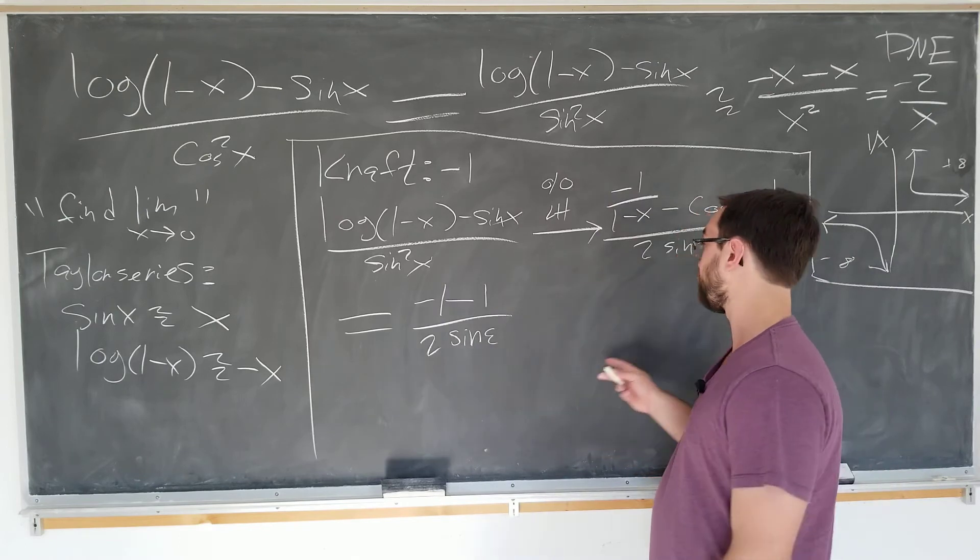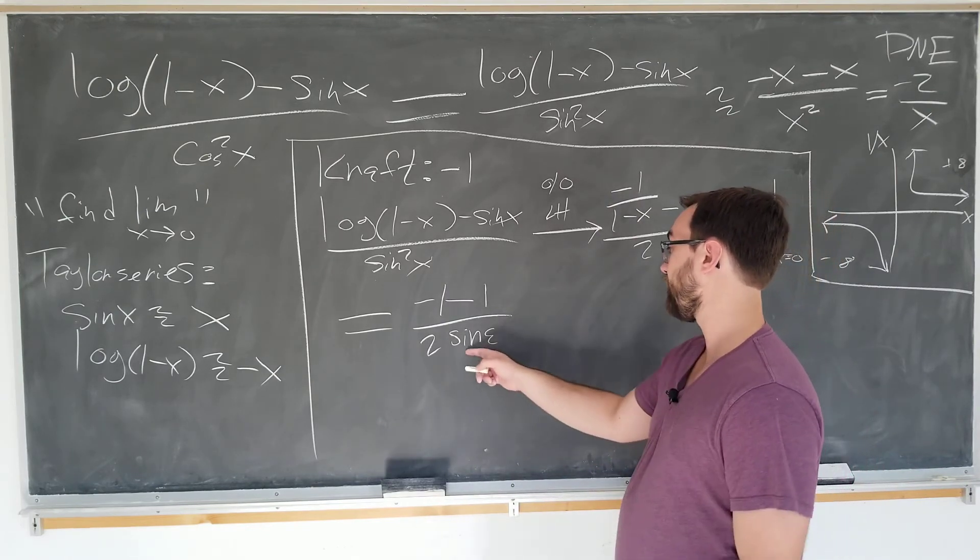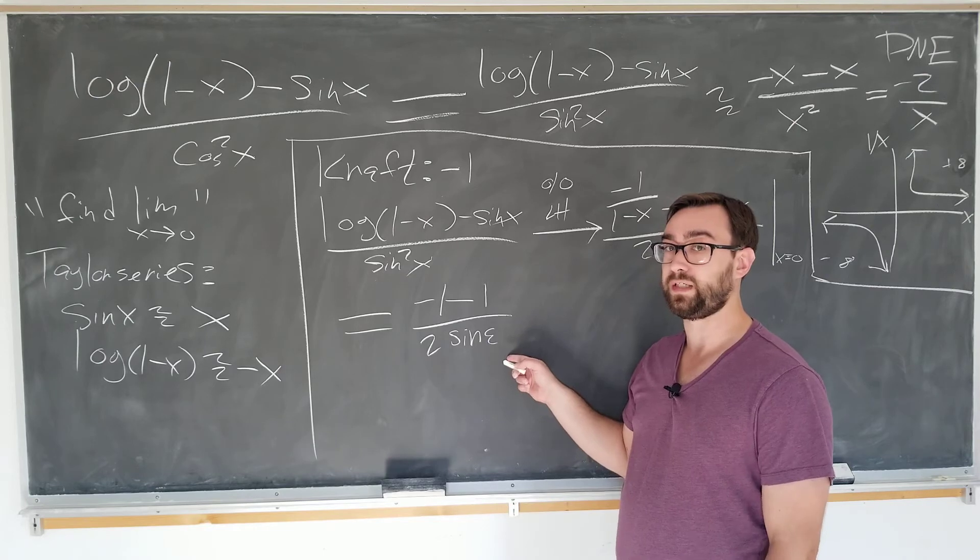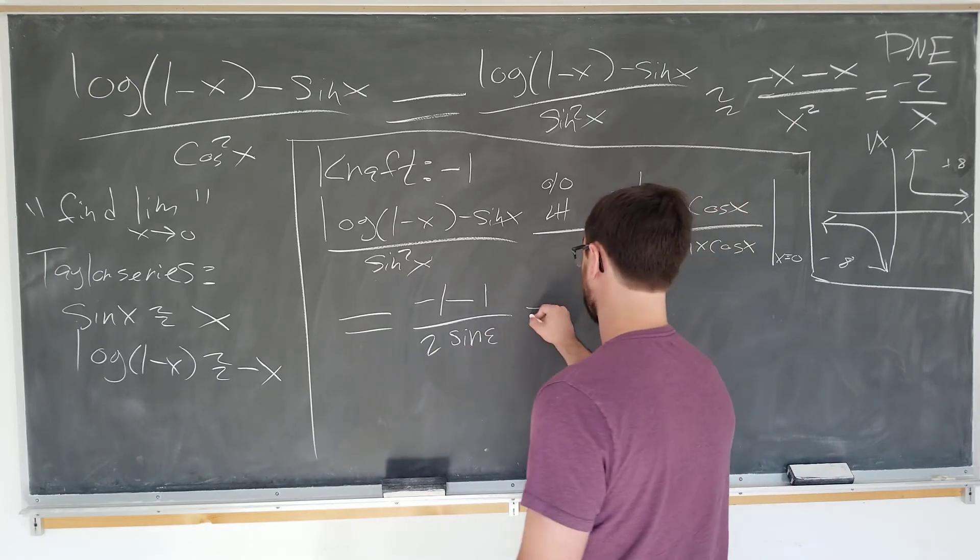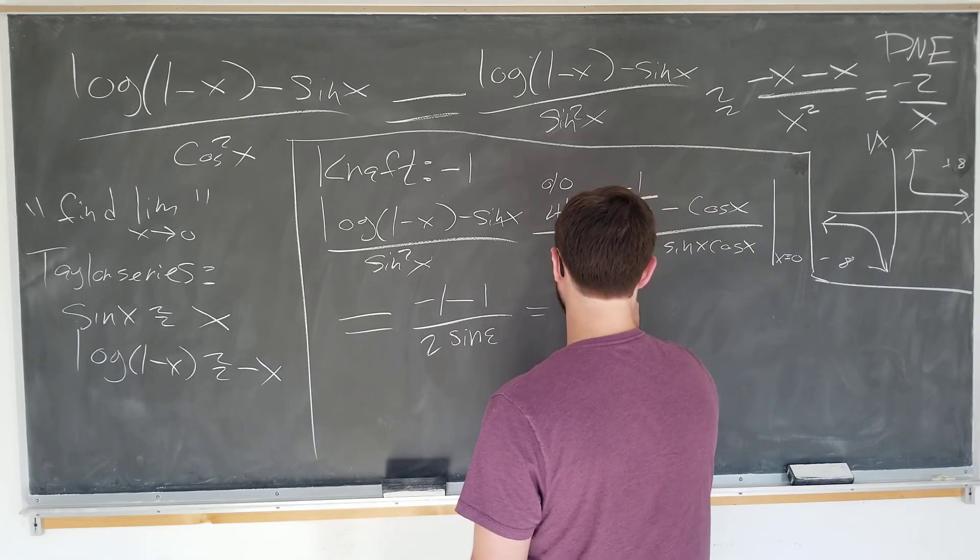She, in her haste, mistakes sine of 0 to be 1. Since this expression is minus 1 over sine epsilon after cancelling the 2's...